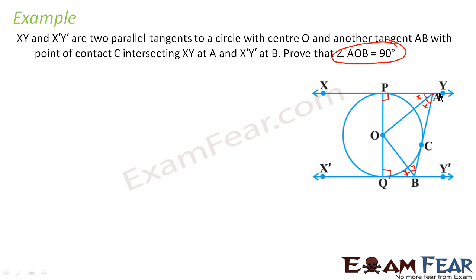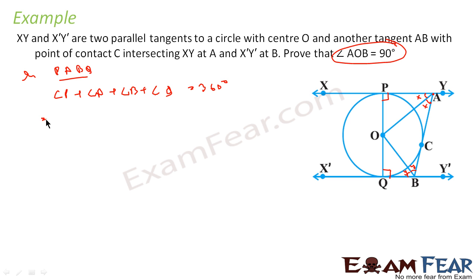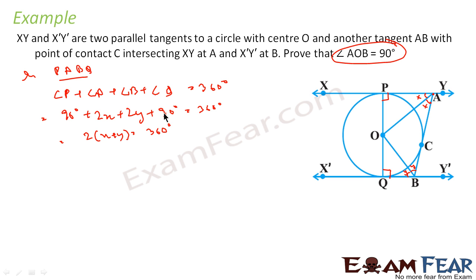The sum of all angles in a quadrilateral is 360 degrees. So 90 plus 2X plus 2Y plus 90 equals 360, giving 2X plus 2Y equals 180, or X plus Y equals 90 degrees. Now in triangle AOB, angle A plus angle O plus angle B equals 180 degrees. Angle A is X and angle B is Y, so angle O equals 180 minus X plus Y equals 180 minus 90 equals 90 degrees.